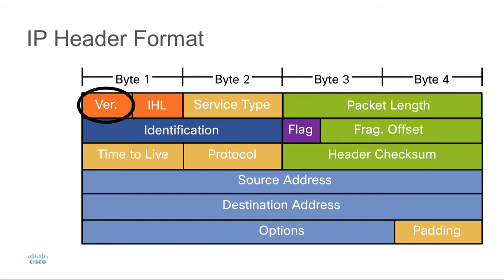The first field is the version field. This is a 4-bit field and it tells us what version of IP is being used — right now we use IP version 4. The next field is the IHL, or IP header length. This is also a 4-bit field and contains the length of the entire IP header, with a minimum length of 20 bytes. These two 4-bit fields combined together equal 1 byte, or 8 bits.